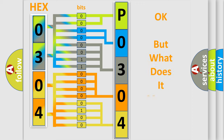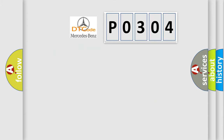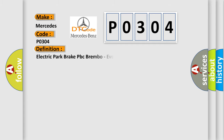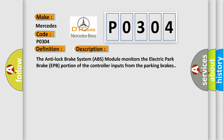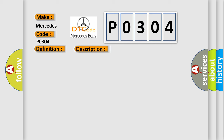The number itself does not make sense to us if we cannot assign information about what it actually expresses. So, what does the Diagnostic Trouble Code P0304 interpret specifically for Mercedes car manufacturers? The basic definition is Electric Park Brake (EPB) / PBC Brembo event information. The Anti-Lock Brake System (ABS) Module monitors the Electric Park Brake (EPB) portion of the controller inputs from the parking brakes. This diagnostic error occurs most often in cases related to the Anti-Lock Brake System (ABS) Module DTCs.